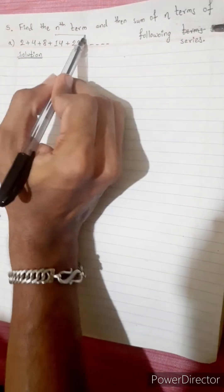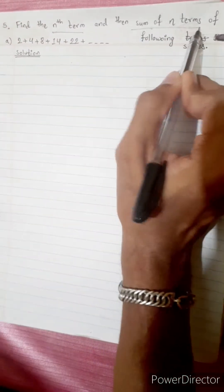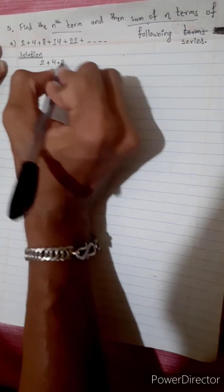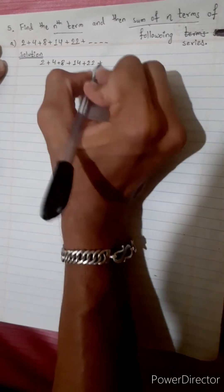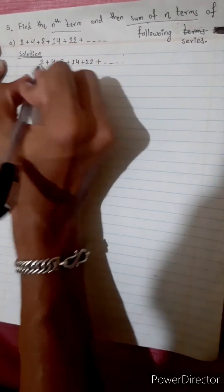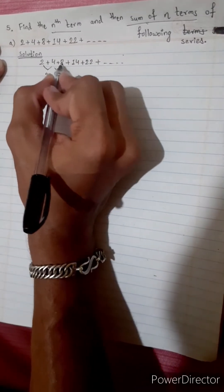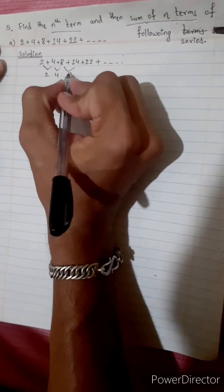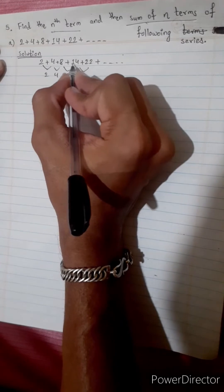Find the nth term. The sequence is 2, 4, 8, 14, 22... The first differences are: 4 minus 2 is 2, 8 minus 4 is 4 — wait, difference is 4, difference is 6, difference is 8. So the first differences are 2, 4, 6, 8.